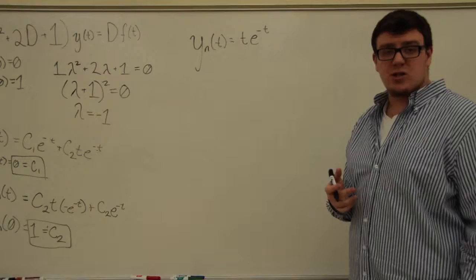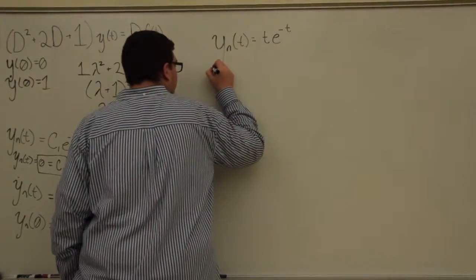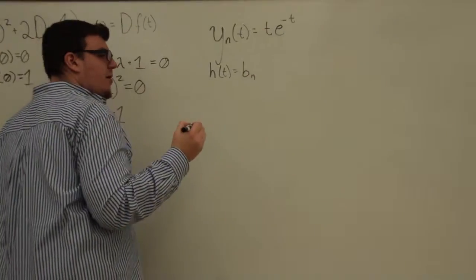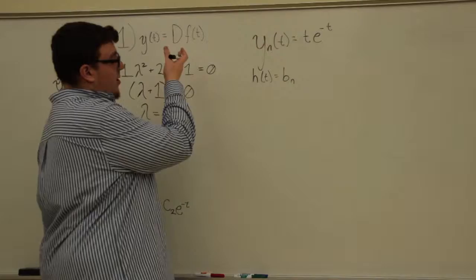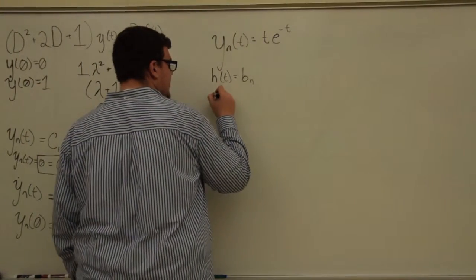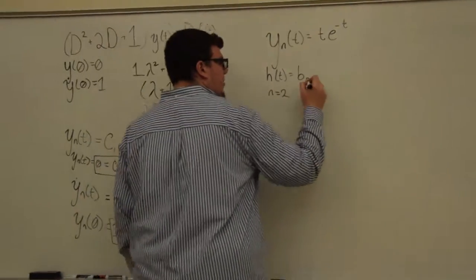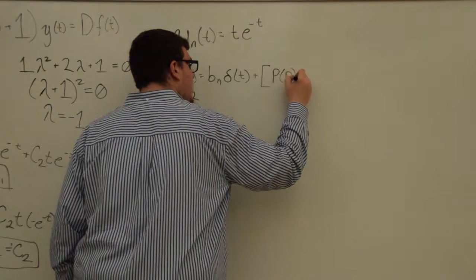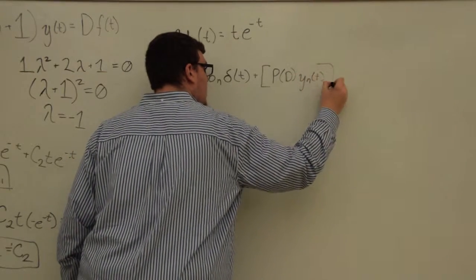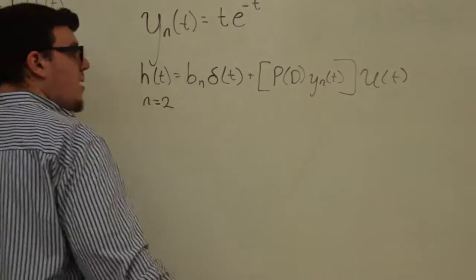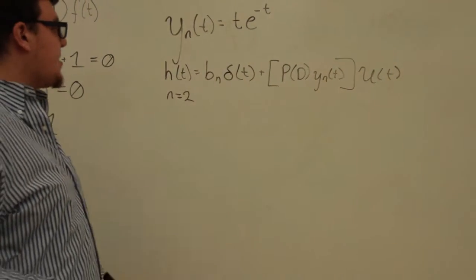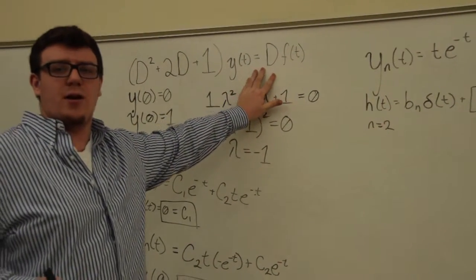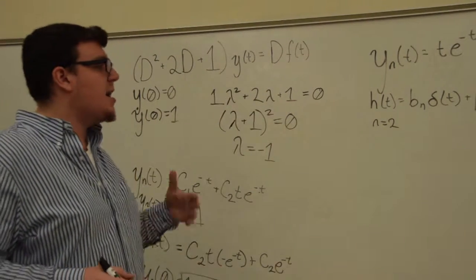Now we can apply a formula from your book: the impulse response h of t equals bn times delta of t plus the operator P of D applied to yn of t times u of t, where u is the Heaviside function. Here bn is the highest-order coefficient of the input side — the coefficient of the second-order derivative on the right-hand side. In this case bn is 0.